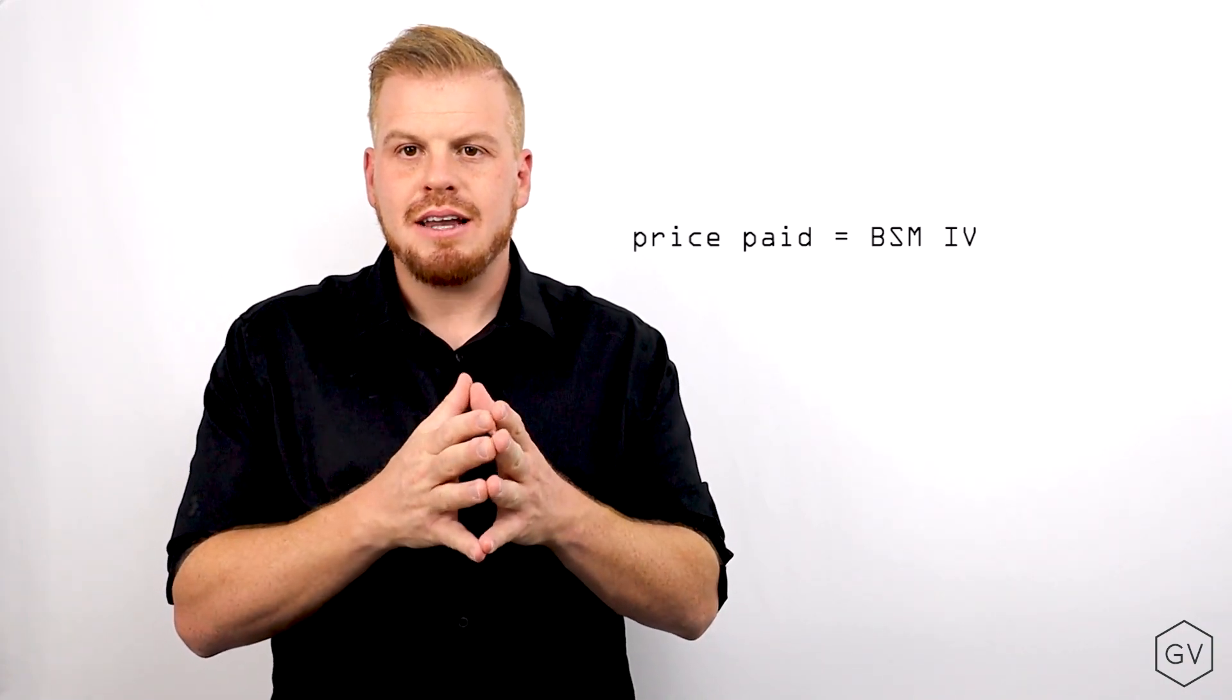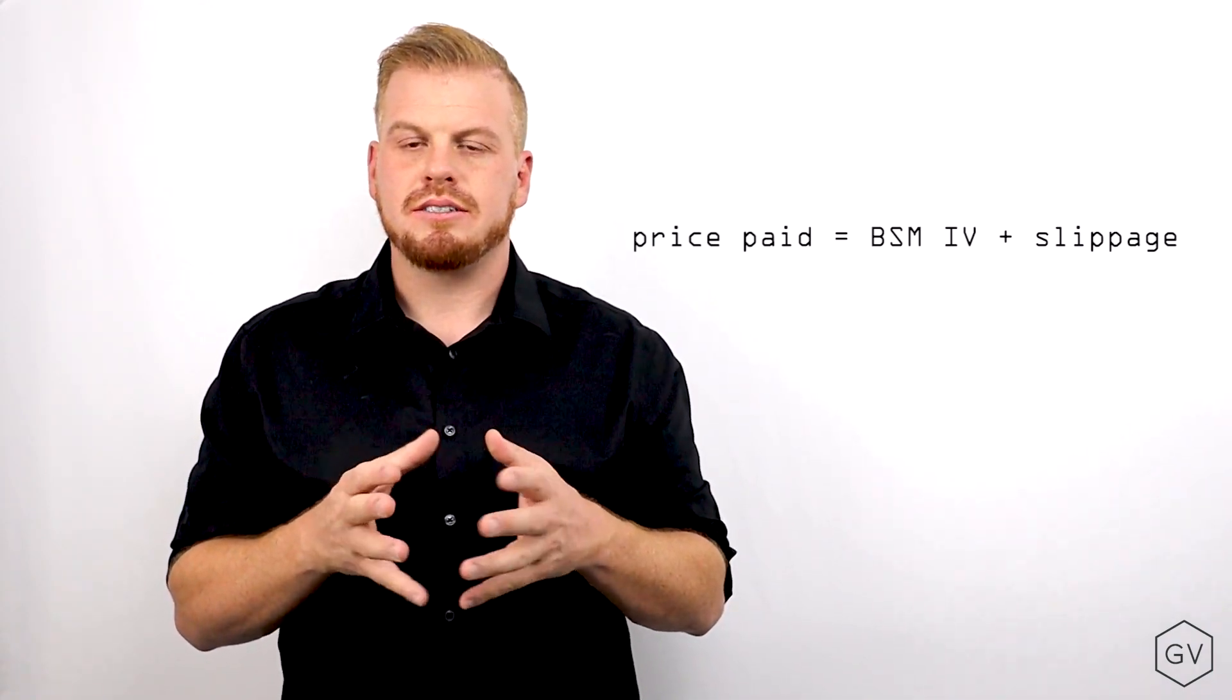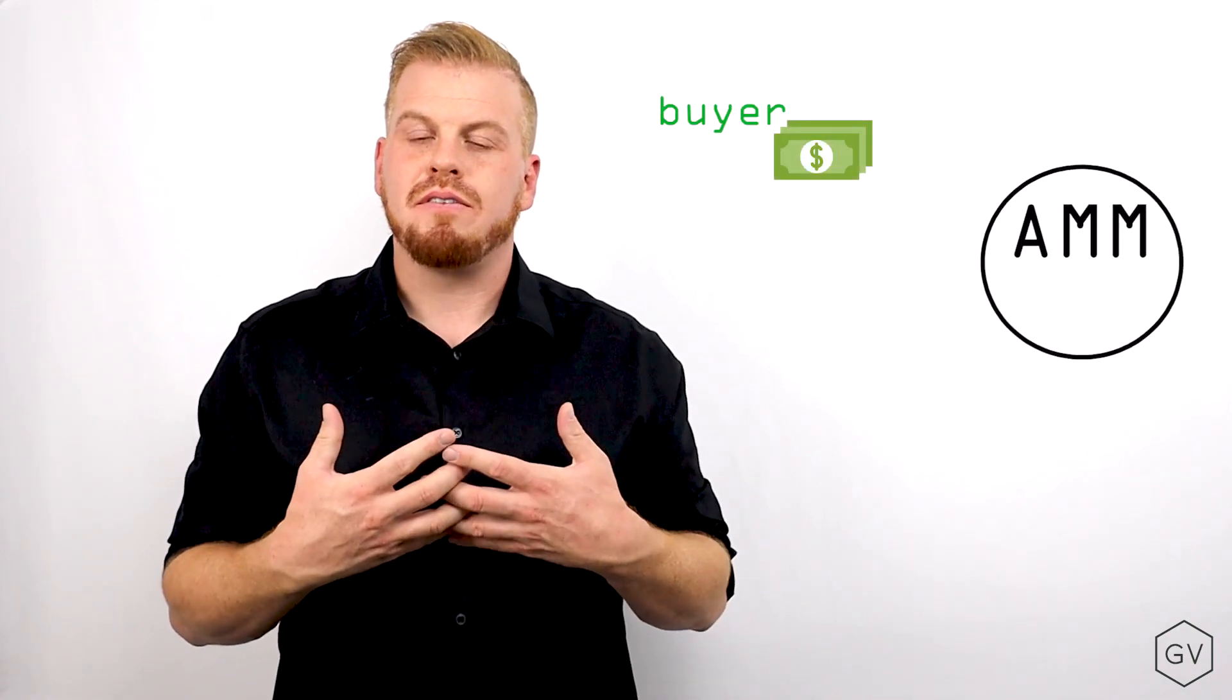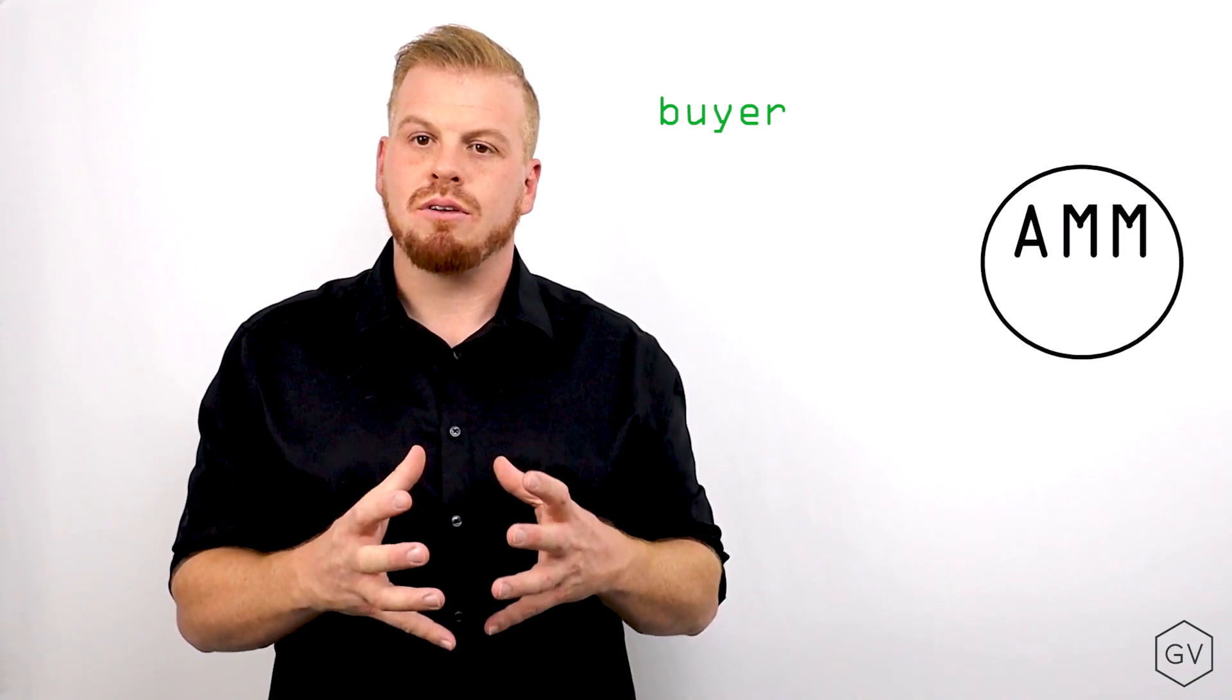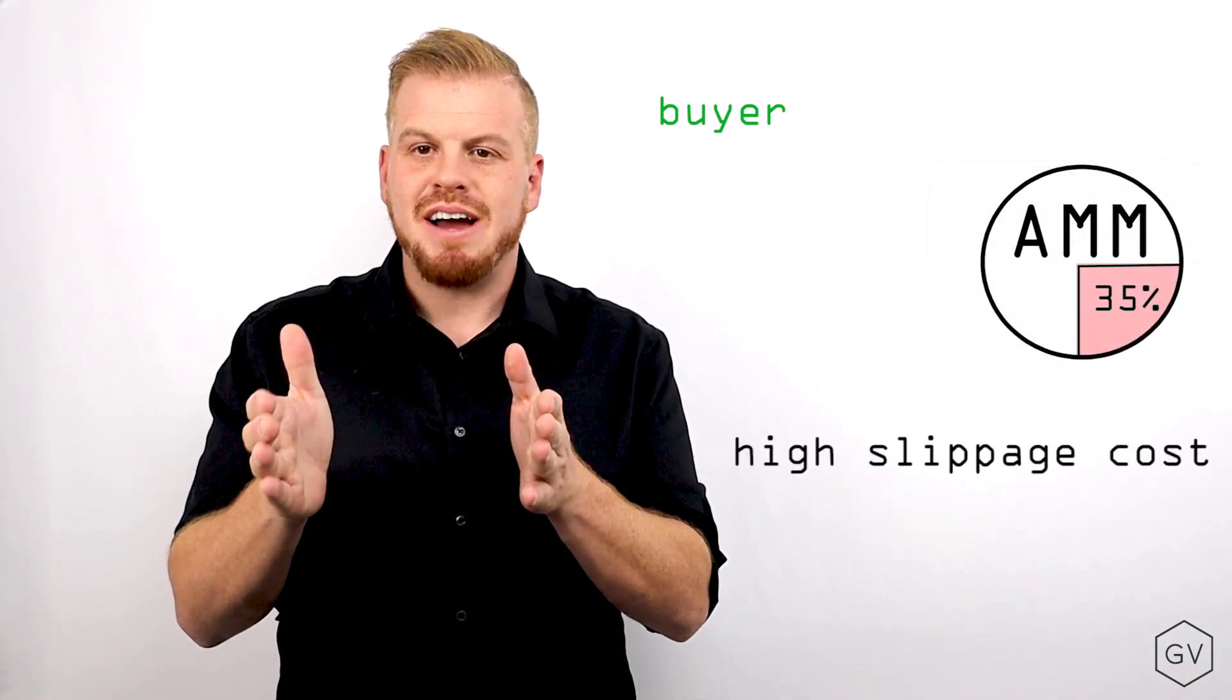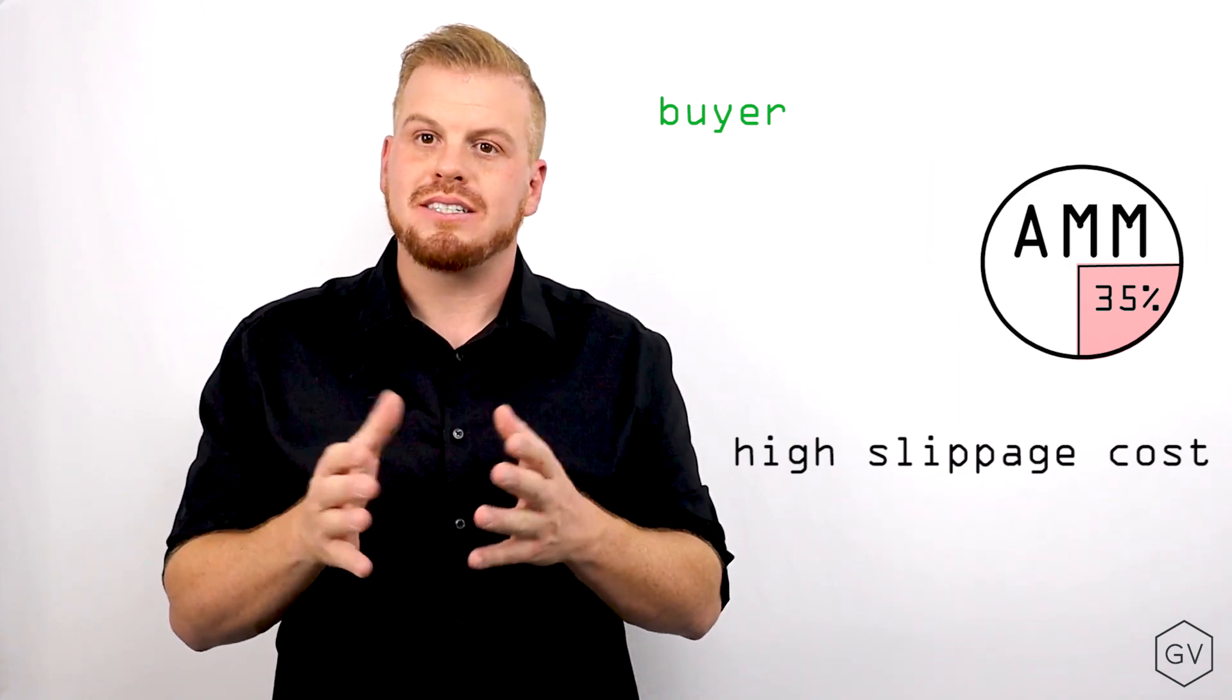That being said, there's also a slippage factor that's added on to the BSM price. So if a trader wants to come in and buy a lot of options that will lock up a large portion of the underlying collateral of the AMM, a slippage factor will be added to the Black Scholes model price, which causes the price to go up.